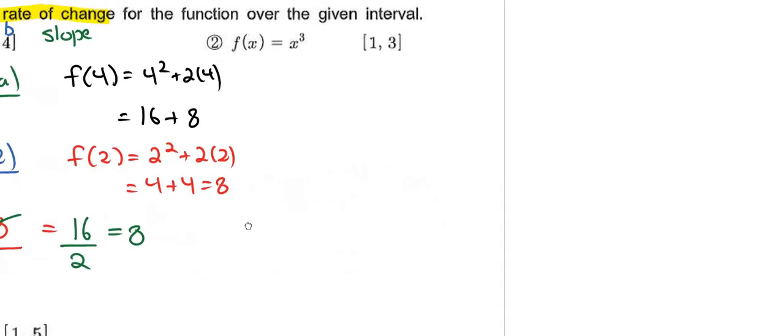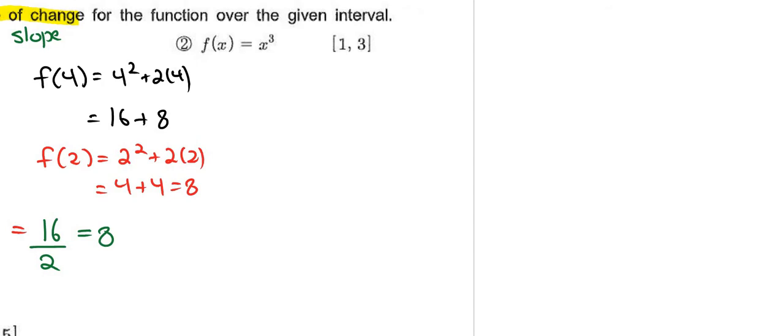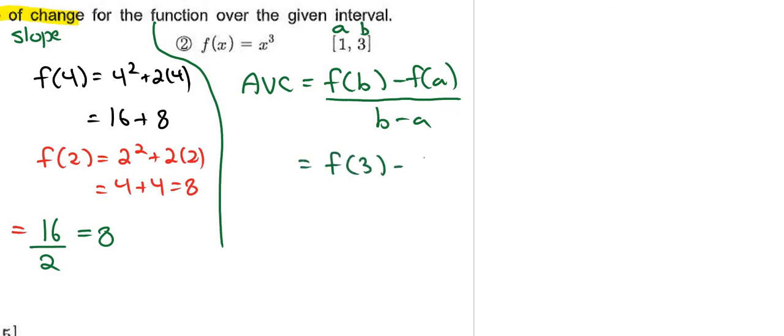Let's move on to question number 2. Question number 2 is a bit easier because the function is just a single term. Average rate of change—you still need to write out this expression for the slope, and a is 1 and b is 3, so I need to see f of 3 minus f of 1 all over 3 minus 1.